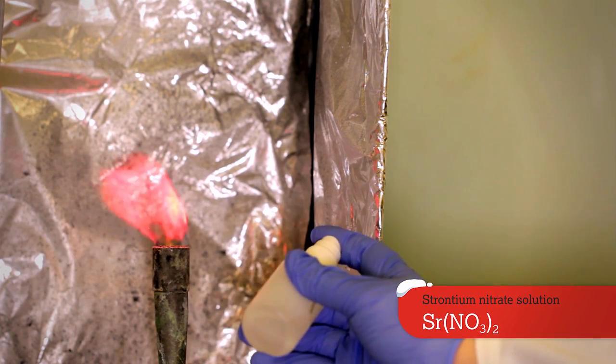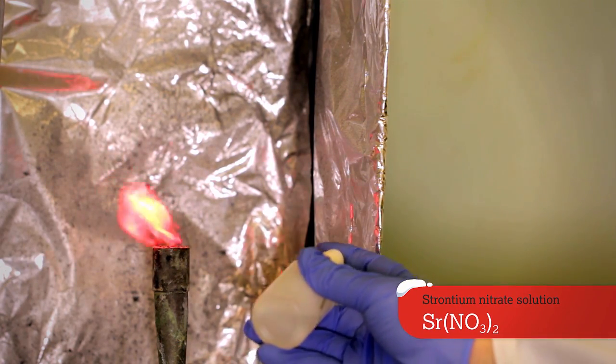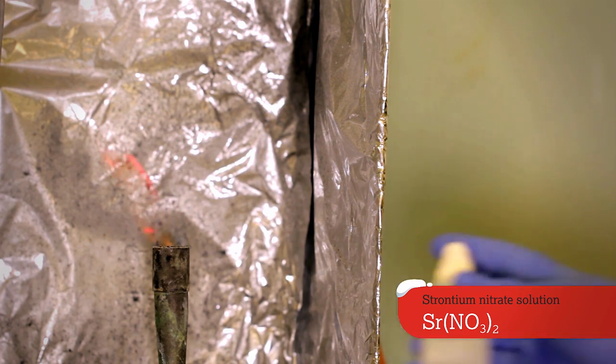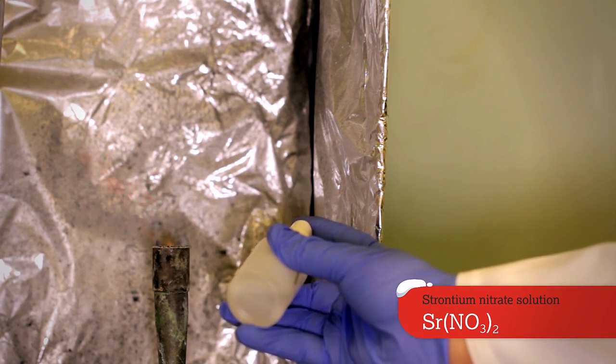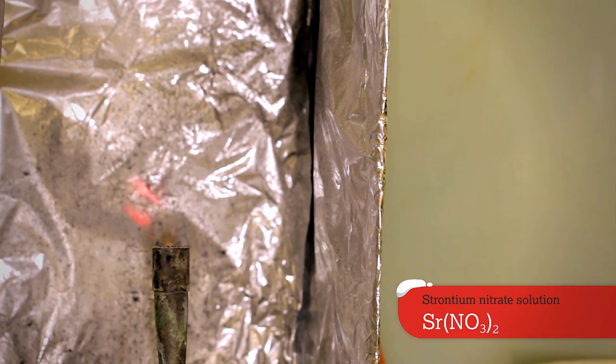So the first element we're going to use is strontium. Strontium is not really used for very much other than coloring flames and making the red flares that you see for rescue operations.